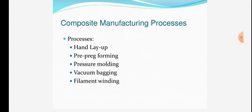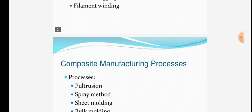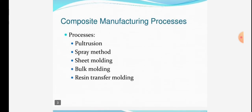Composite manufacturing processes are as follows: hand layup process, prepreg forming process, pressure molding process, vacuum bagging process, filament winding process, pultrusion process, spray method, sheet molding, bulk molding, and resin transfer.